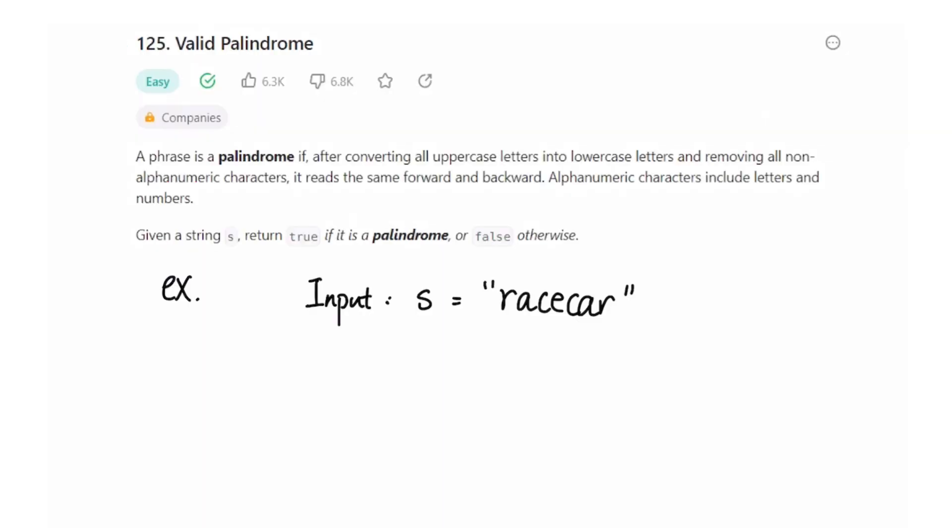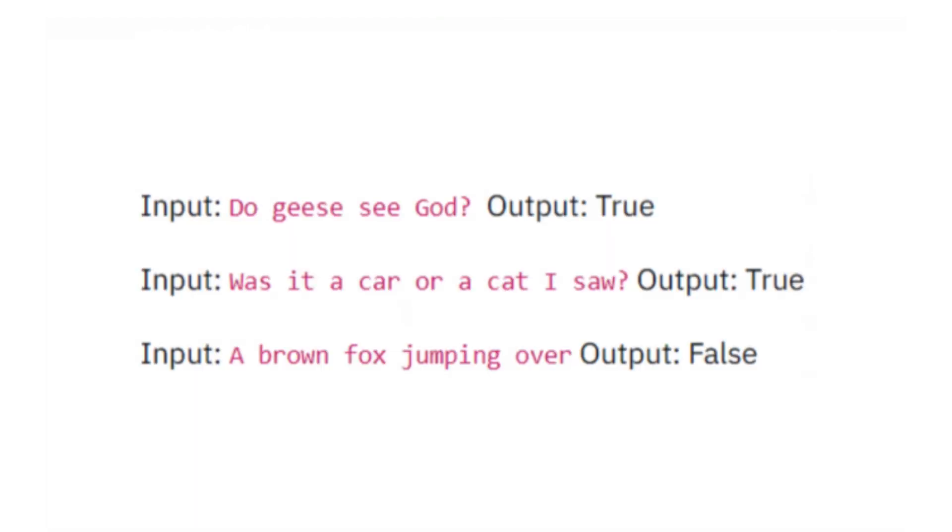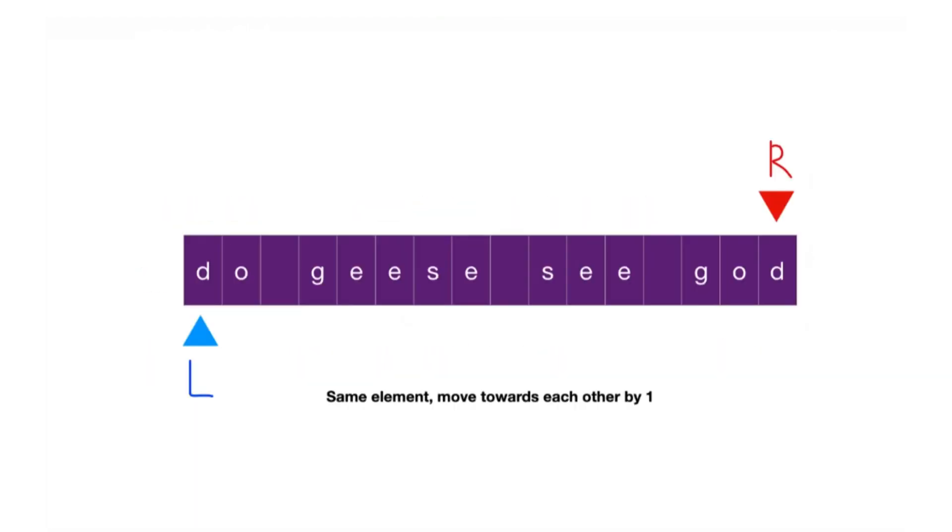The fifth question is valid palindrome. Determine whether a string is a palindrome, ignoring non-alphanumeric characters and cases. Valid palindrome is a straightforward two-pointer problem. We have two pointers, L and R, which start at the leftmost and rightmost positions of the given string respectively.